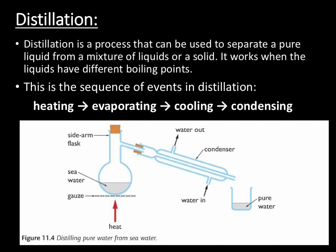Distillation allows us to separate a pure liquid from a mixture of liquids, or we may have a solid present as well, as we do here with seawater. It works because the liquids have different boiling points. If we are separating two liquids, this is known as simple distillation. In order to carry out simple distillation, we heat the solution, and the part of the solution that has the lowest boiling point will evaporate first. This evaporated liquid — this gas — will travel up and into the condenser.